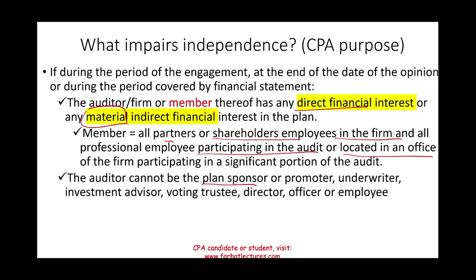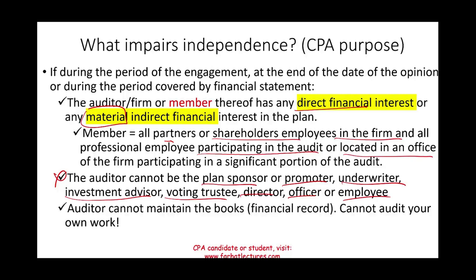The auditor also cannot be an underwriter of the plan, an investment advisor to the plan, a voting trustee, director, officer, or employee. The plan will have assets — stocks, bonds, all sorts of investments — and the auditor cannot be any of these things with respect to the plan. Also, the auditor cannot maintain the books of the plan; you cannot maintain the books and then audit your own work. Furthermore, the auditor cannot be a party in interest with the plan, meaning you cannot buy or sell anything to or from the plan, or advise them, because there's always the potential for conflict of interest, and the auditor must be independent from the plan itself.